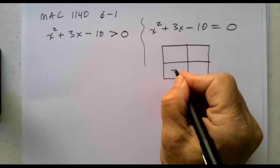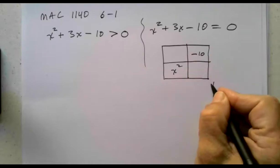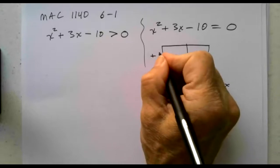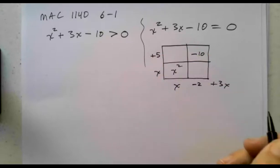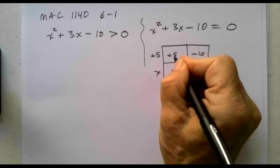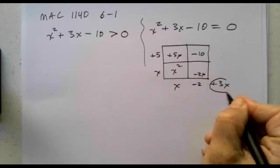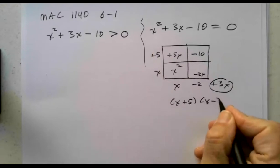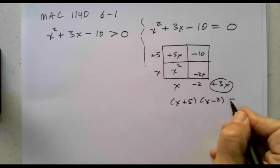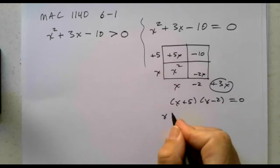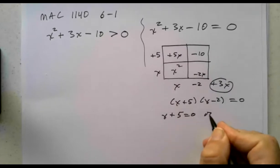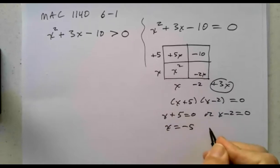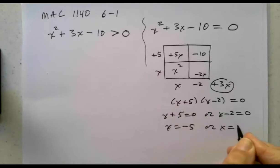Setting up the factoring: x squared, negative 10, and plus 3x. We get x times x equals x squared, and 5 times negative 2 gives plus 5x minus 2x, which is indeed 3x. So we get (x+5)(x-2). If that equals 0, either x plus 5 is 0 or x minus 2 is 0, giving x equals negative 5 or x equals 2.